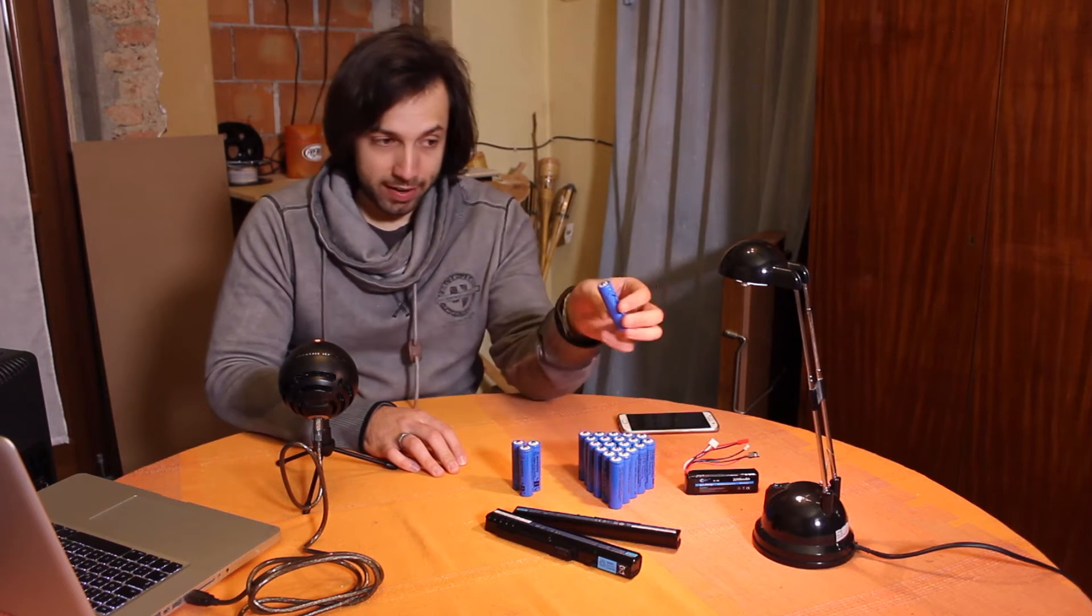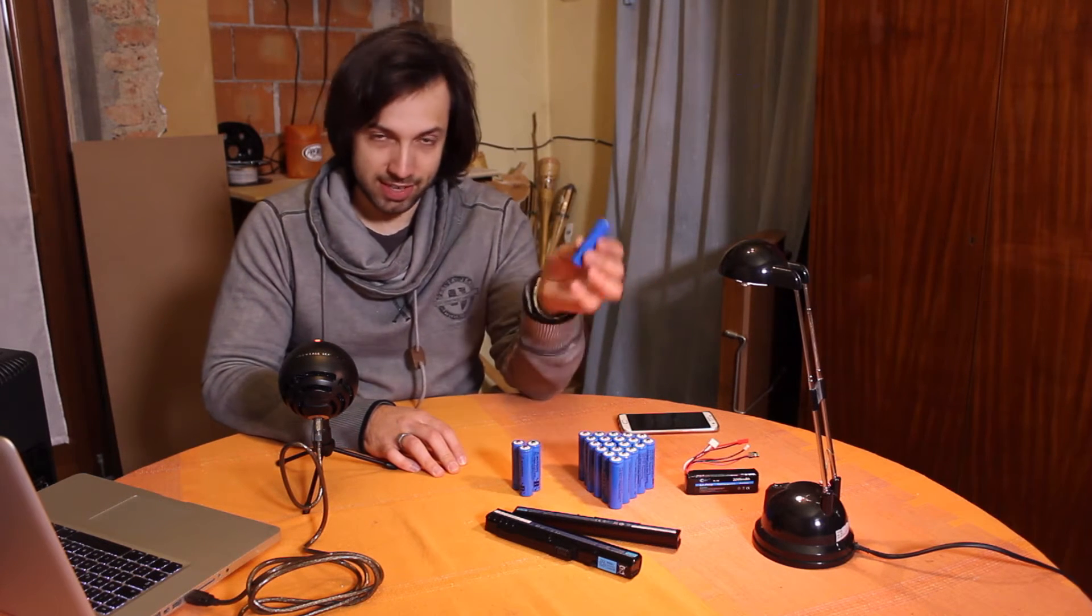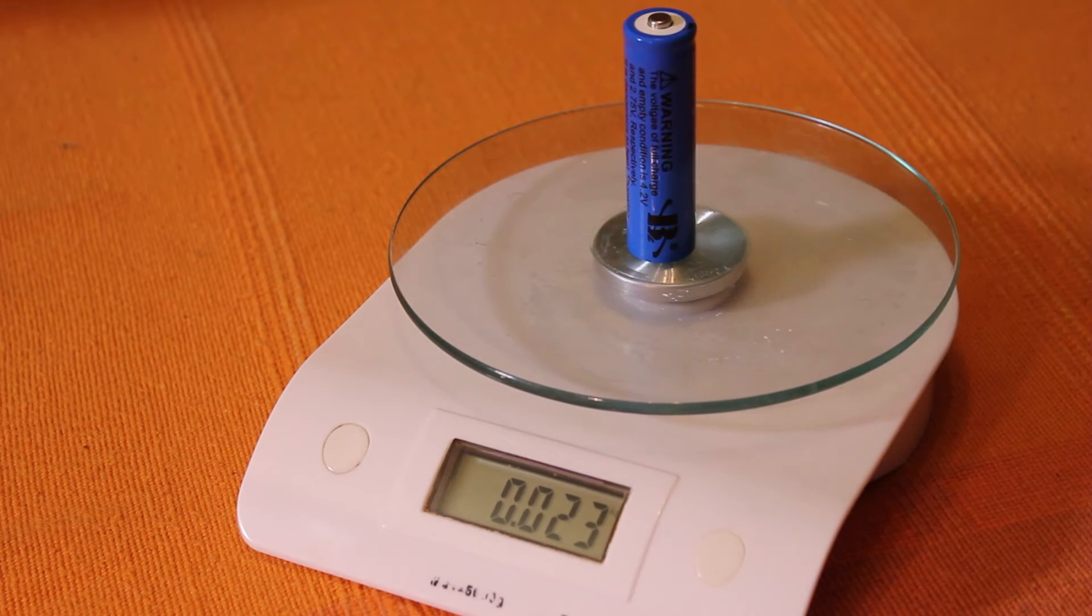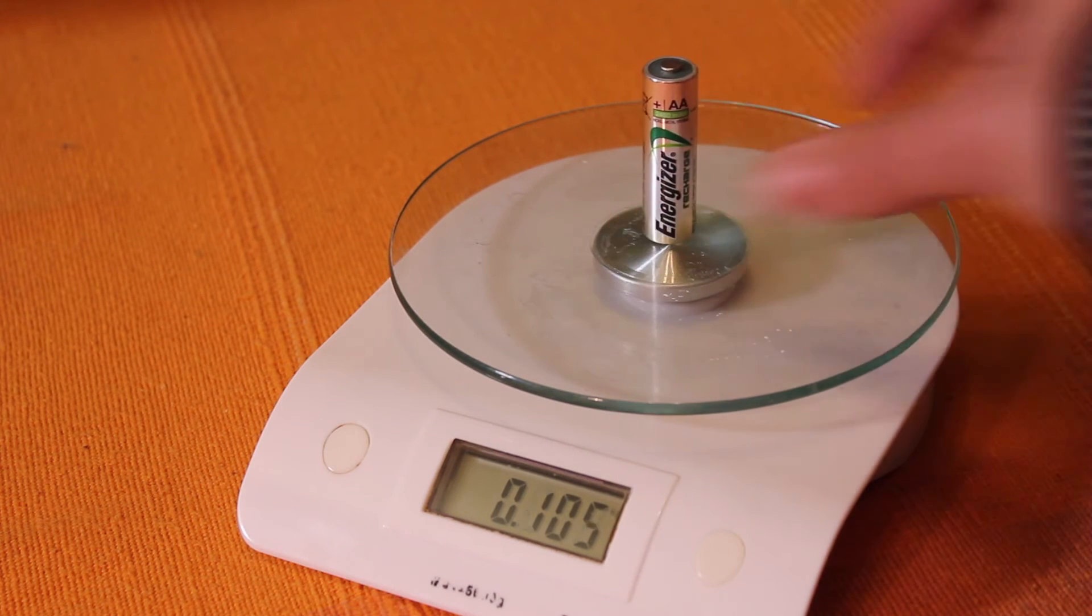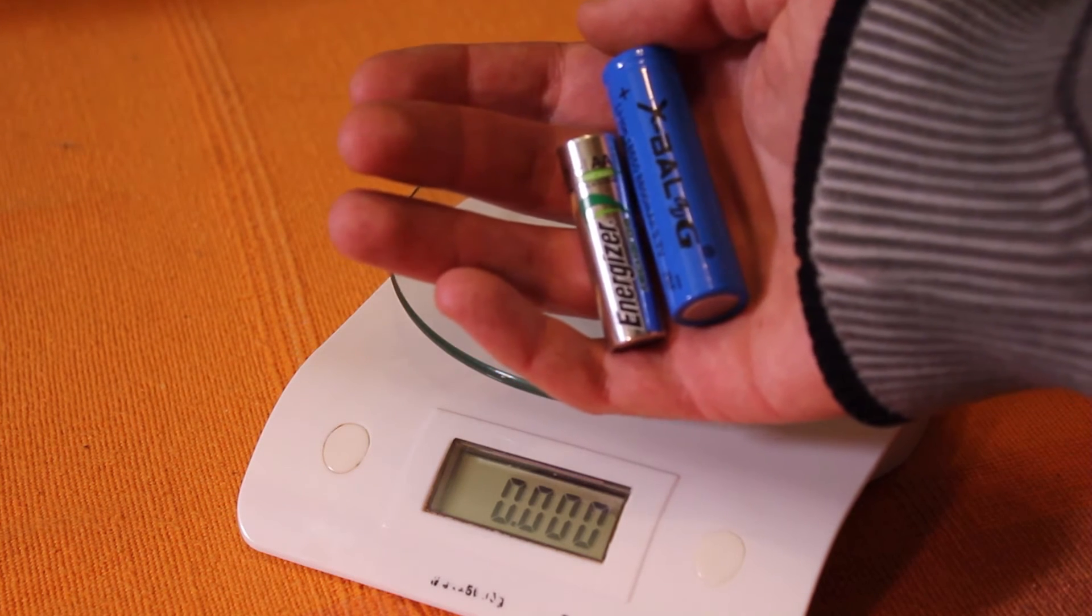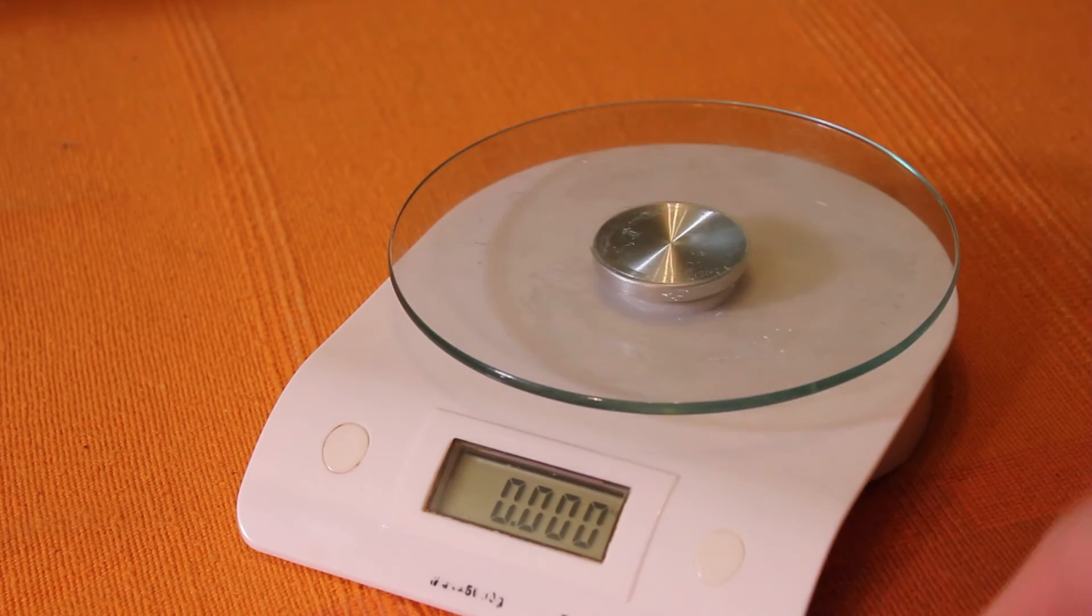But as you pick one of these up you realize there's something a little bit off. In fact this cell weighs only 23 grams. For comparison an ordinary AA battery weighs 29 grams although it's much smaller. It would be almost half the volume but weighs more.